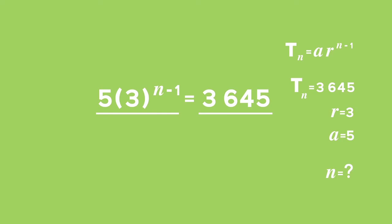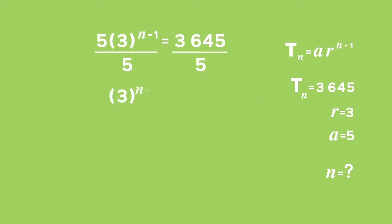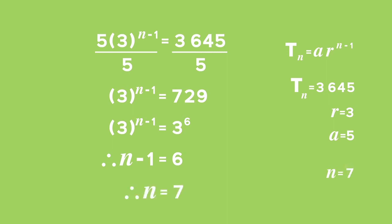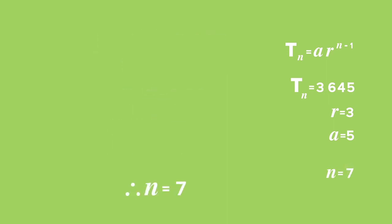Divide both sides by 5. 3 to the power of n minus 1 is equal to 729. 3 to the power of n minus 1 is equal to 3 to the power of 6. Therefore, n minus 1 is equal to 6, therefore n is equal to 7. The seventh term in this sequence has a value of 3,645.